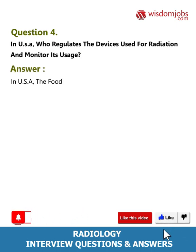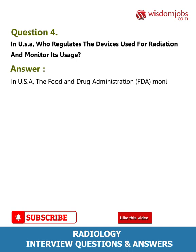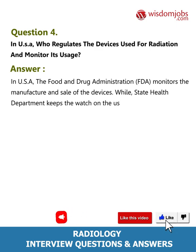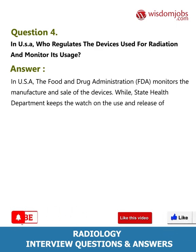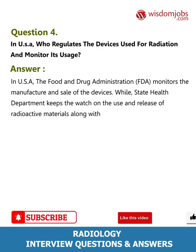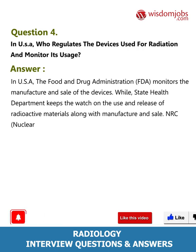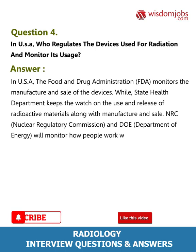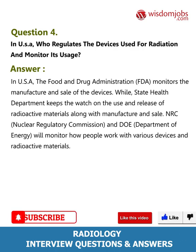Question 4: In the USA, who regulates the devices used for radiation and monitors their usage? Answer: The Food and Drug Administration (FDA) monitors the manufacture and sale of devices, while the state health department keeps watch on the use and release of radioactive materials. The NRC (Nuclear Regulatory Commission) and DOE (Department of Energy) monitor how people work with various devices and radioactive materials.